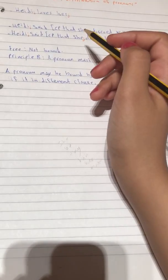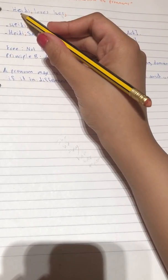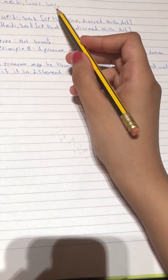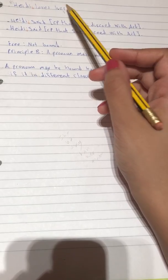So if you want to say Heidi loves her and put here I, which means refers to the same person which is Heidi, this sentence actually will be ungrammatical. Why is that? Because we can say that a pronoun is bound by an antecedent in the same clause.